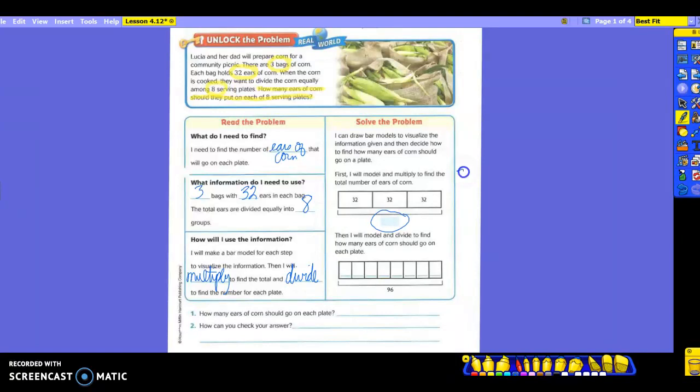So 32 times three. So write it over here if you can't do that in your head. Three times two is six. Three times three is nine. So you're going to put 96 down here for the total number of ears of corn. Yeah, we know you can add 32, 32, and 32. But I need you to know that you can do 32 times three because we're working on multiplication and division right now. So yeah, you can use addition to help you, but I need you to know that it's going to be 32 times three.